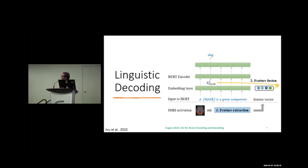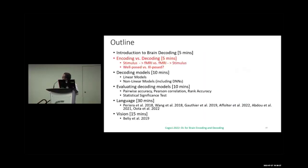For linguistic decoding, the input is fMRI and we try to predict the category — whether it's related to a cat or a dog. So what is the difference between encoding and decoding?